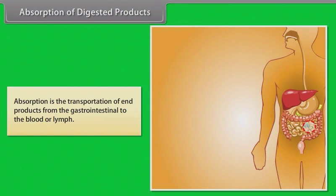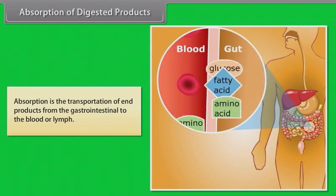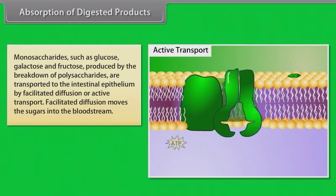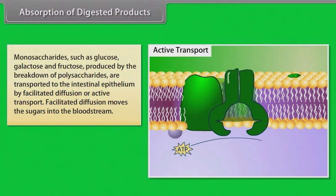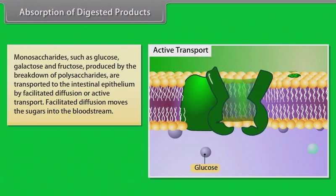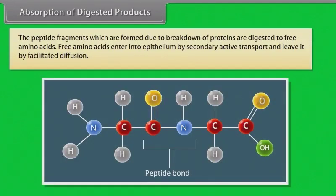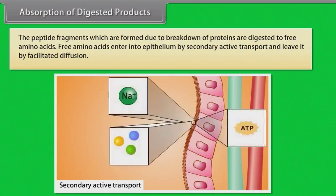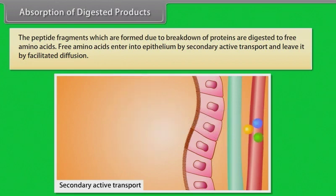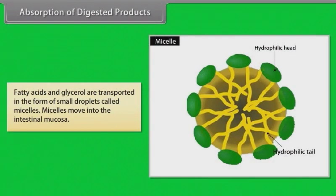Absorption is the transportation of end products from the gastrointestinal tract to the blood or lymph. Monosaccharides such as glucose, galactose, and fructose, produced by the breakdown of polysaccharides, are transported to the intestinal epithelium by facilitated diffusion or active transport. Facilitated diffusion moves the sugars into the bloodstream. Water is transported through osmotic gradient. Peptide fragments formed from protein breakdown are digested to free amino acids, which enter the epithelium by secondary active transport and leave by facilitated diffusion.